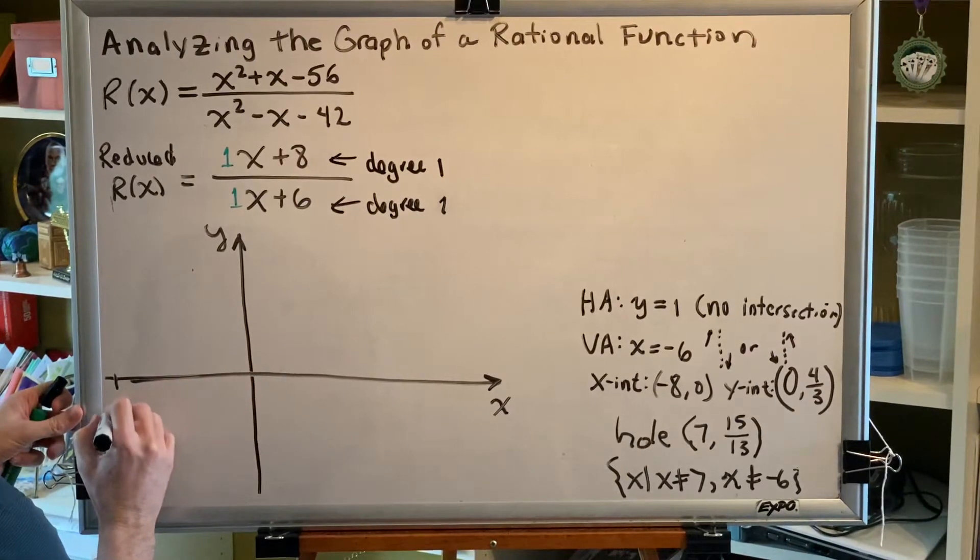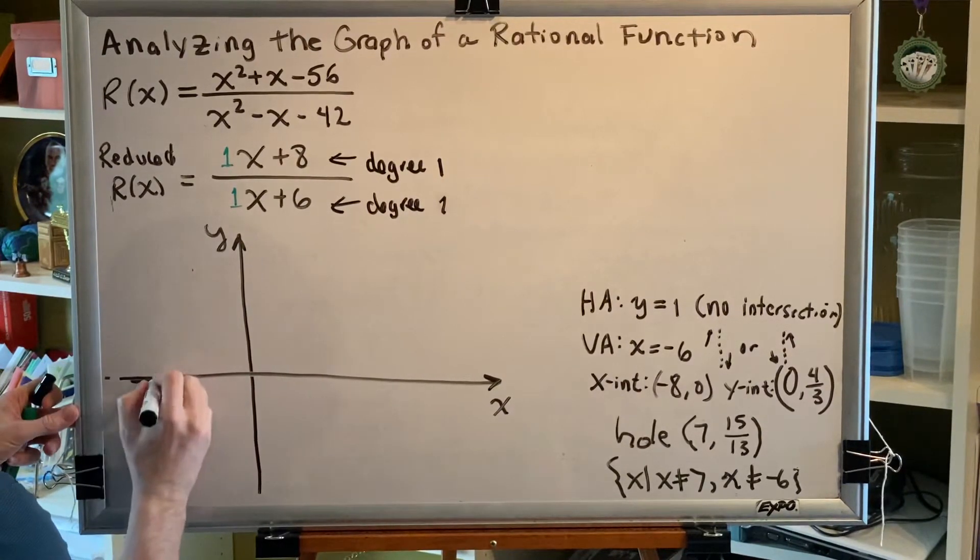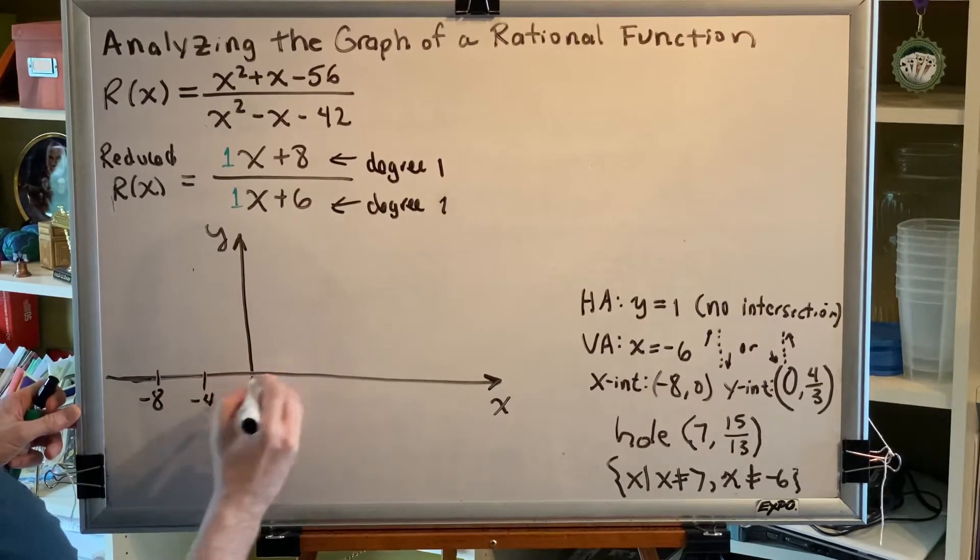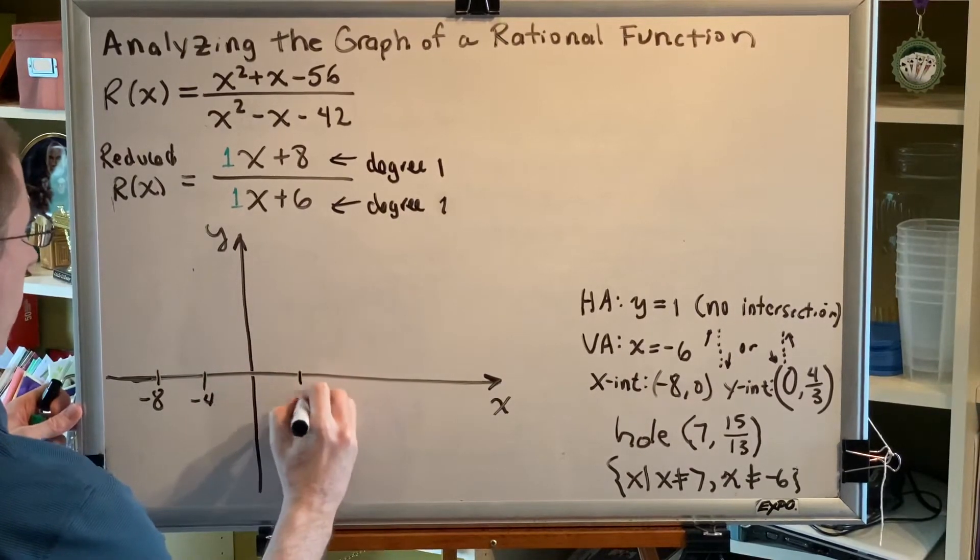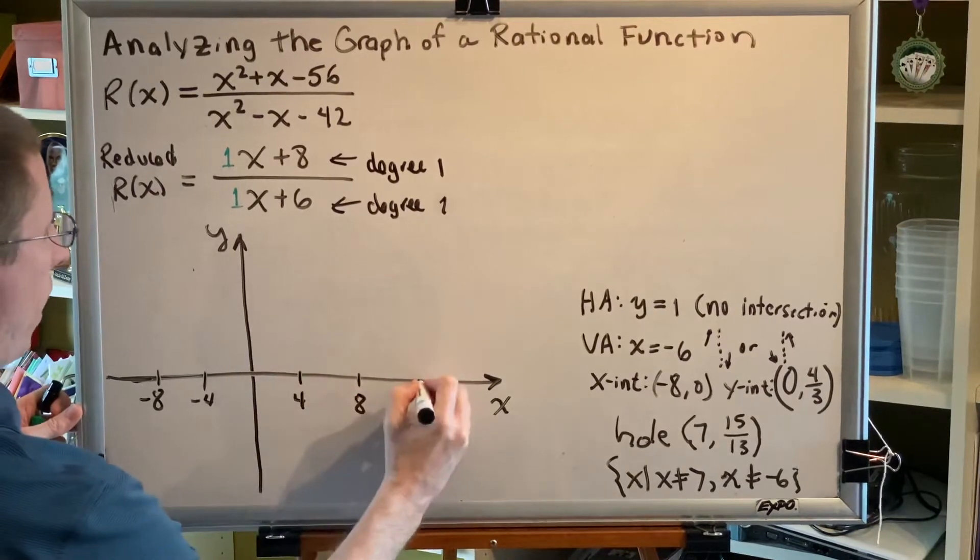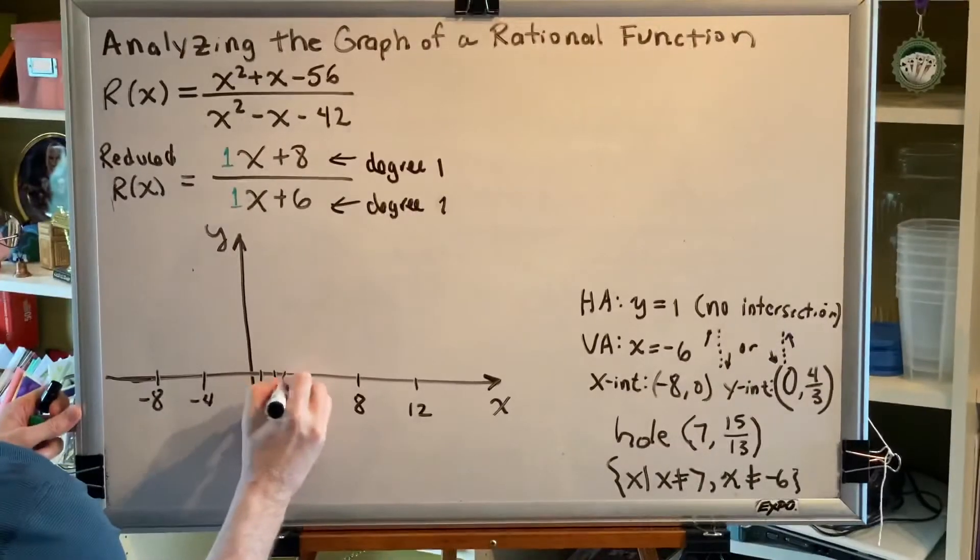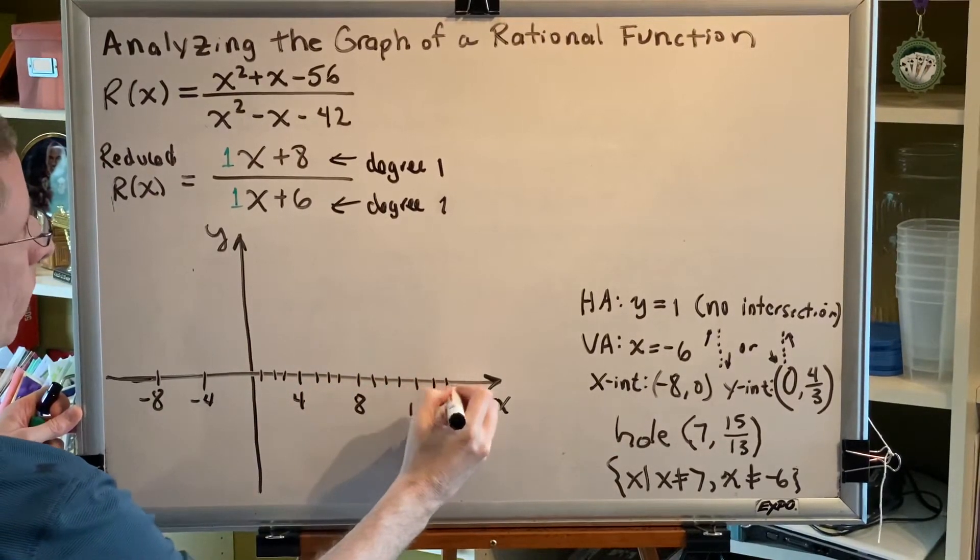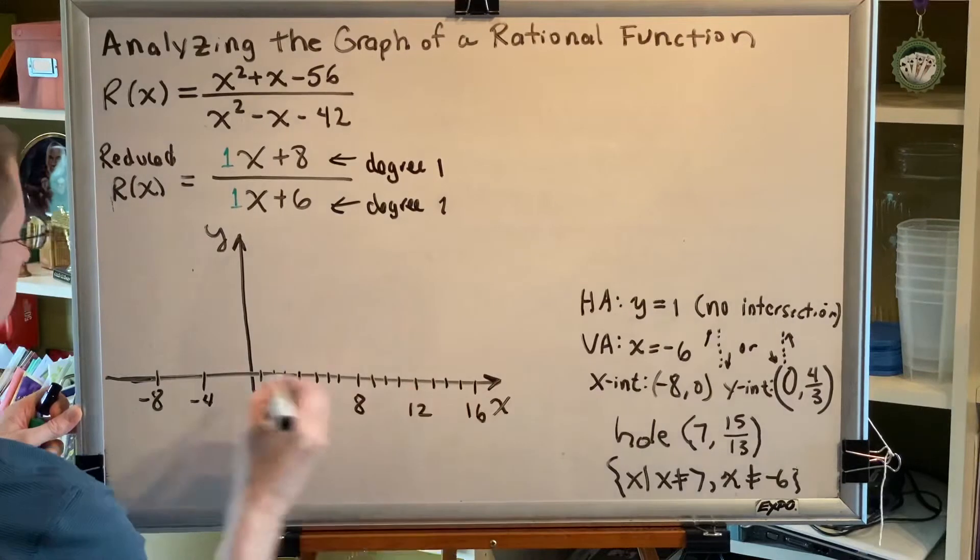So let's go ahead and make sure that our x value goes all the way out to negative 8. So we'll make this negative 8 right here. In fact, let's make it a little sooner than that. So negative 8, which means this would be negative 4, which means this would be positive 4, and this would be positive 8, and this would be positive 12. There's even room for a 16 over here.